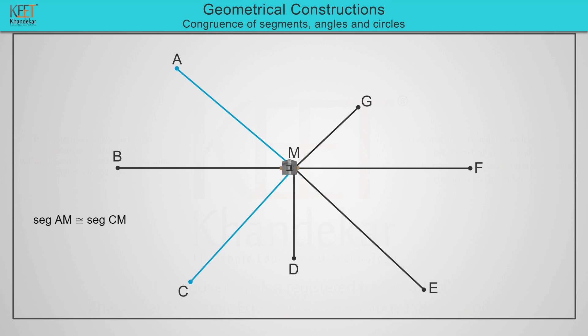Now measure the length of segment BM and compare it with the length of other segments. We note that the length of segment BM is equal to length of segment FM and segment EM. So we write segment BM is congruent to segment FM is congruent to segment EM.